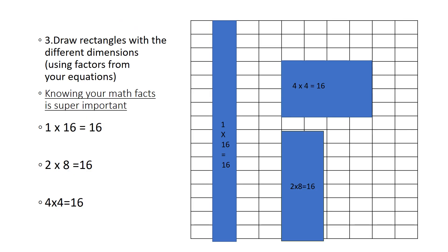After we know all the equations, then we're going to draw the rectangles using those dimensions. So our first one is one times 16. So the width is one, and the length is 16. Then we have our next rectangle, which is two times eight. And then we have four times four. So you can see I have four going down and four going across, which is also 16. So these all equal 16 square units.